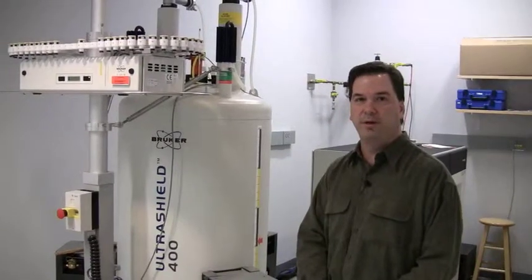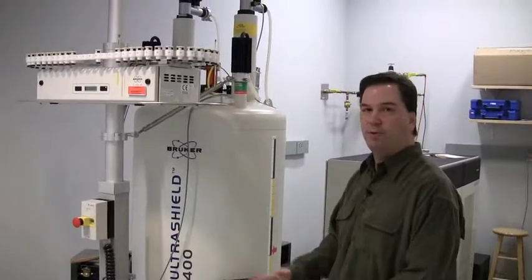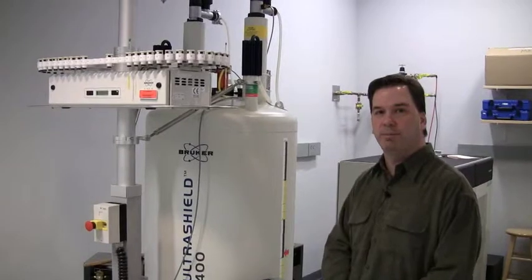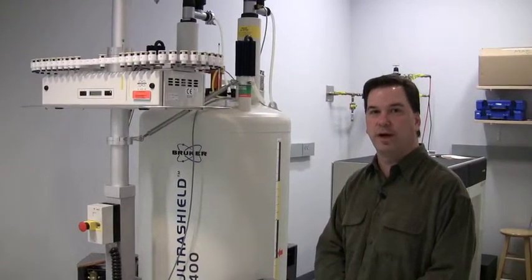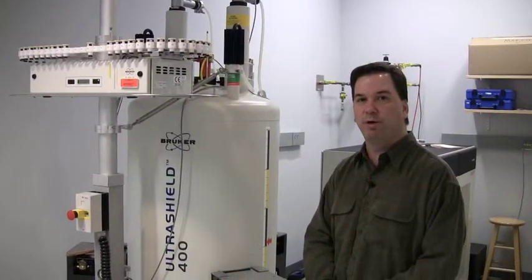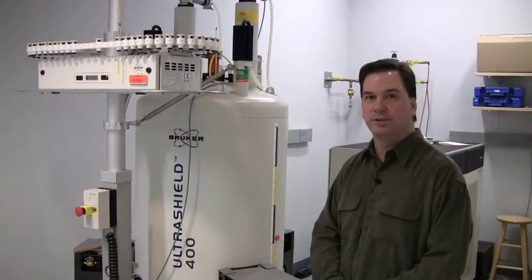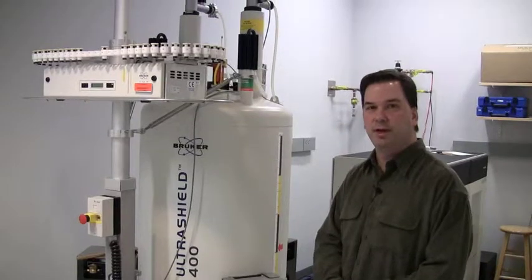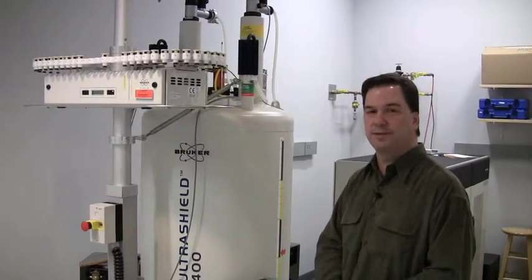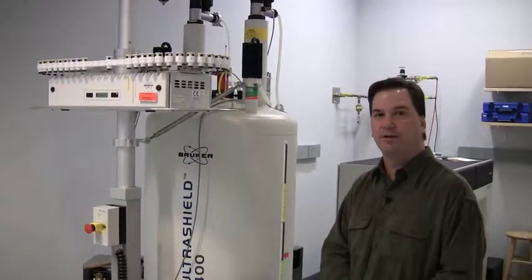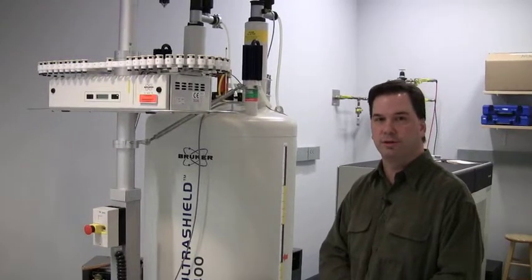Whether it be proton, carbon, or phosphorus. This spectrometer, once again, is capable of observing any nuclei from phosphorus-31 down to silicon-109. It's what we call a broadband probe, and so we're able to run any type of NMR active nuclei that a user would be interested in acquiring.